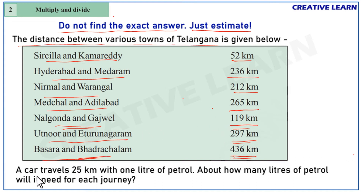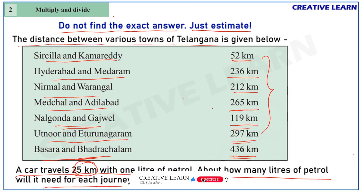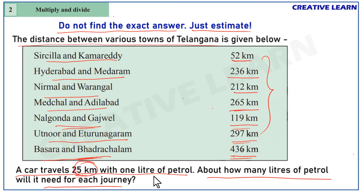Now, a car travels 25 kilometers with one liter of petrol. About how many liters of petrol will it need for each journey? We already know the distances between the various towns, and the fuel consumption is 25 kilometers per liter. So let's find out how much petrol may be required for each journey.